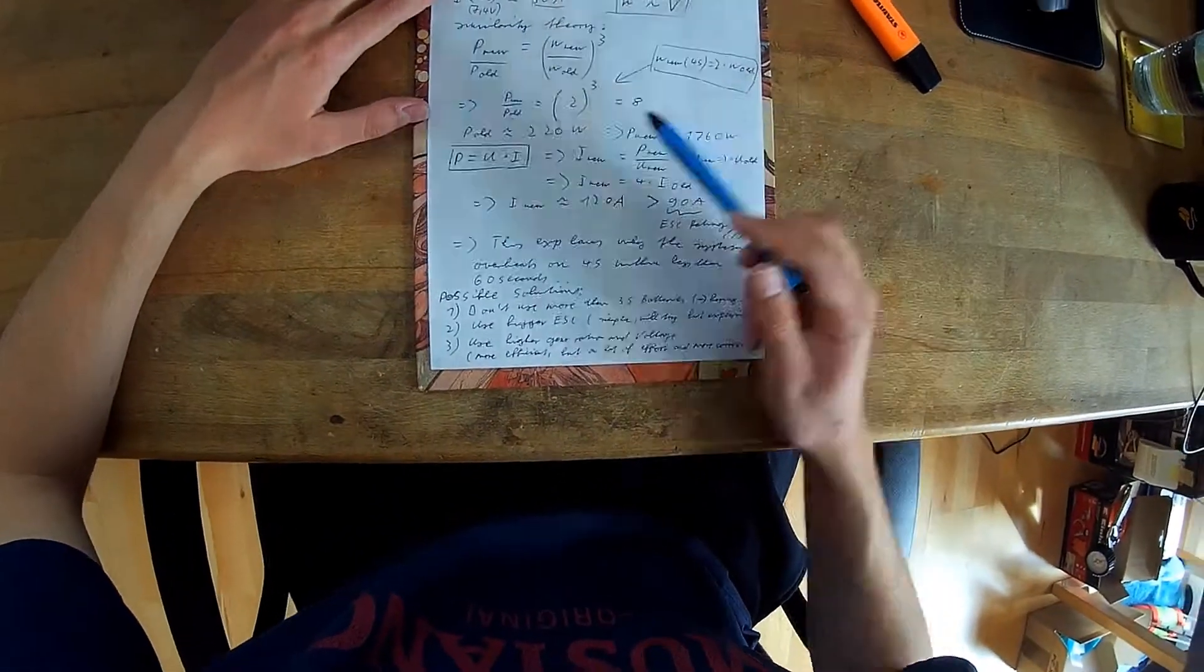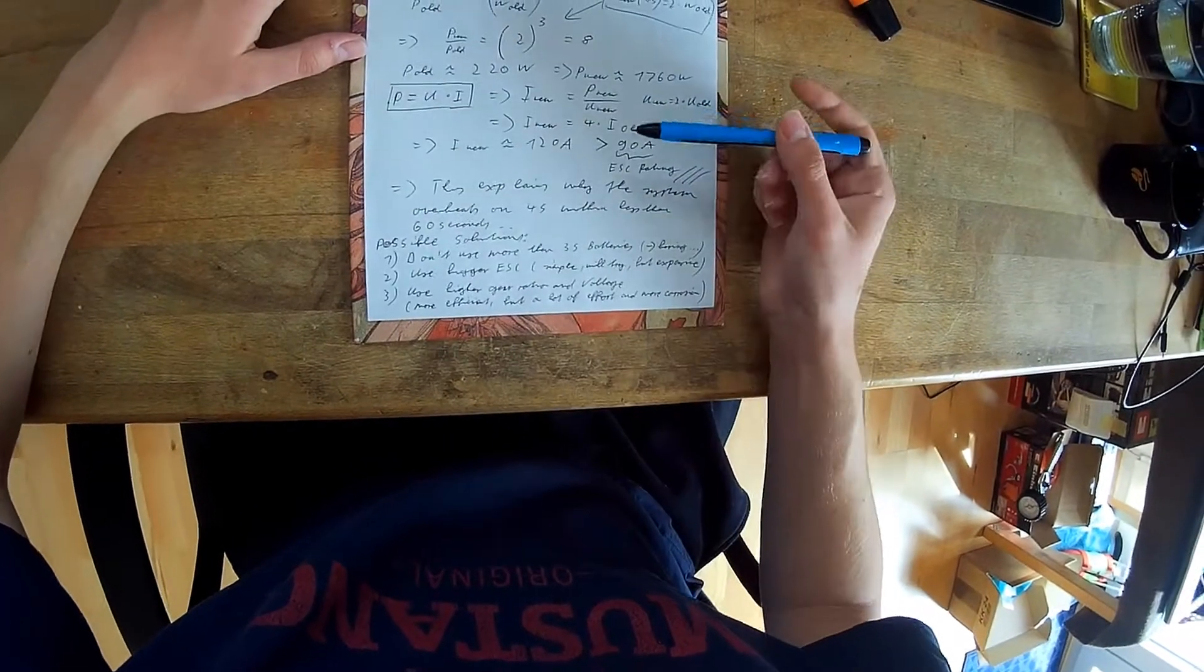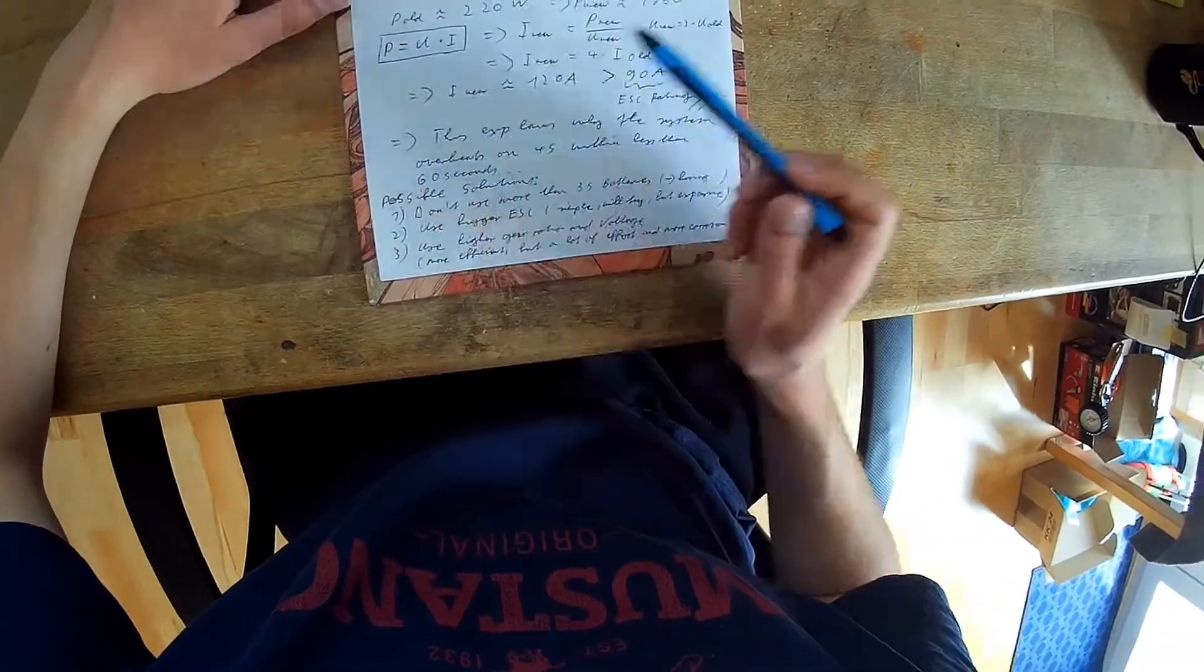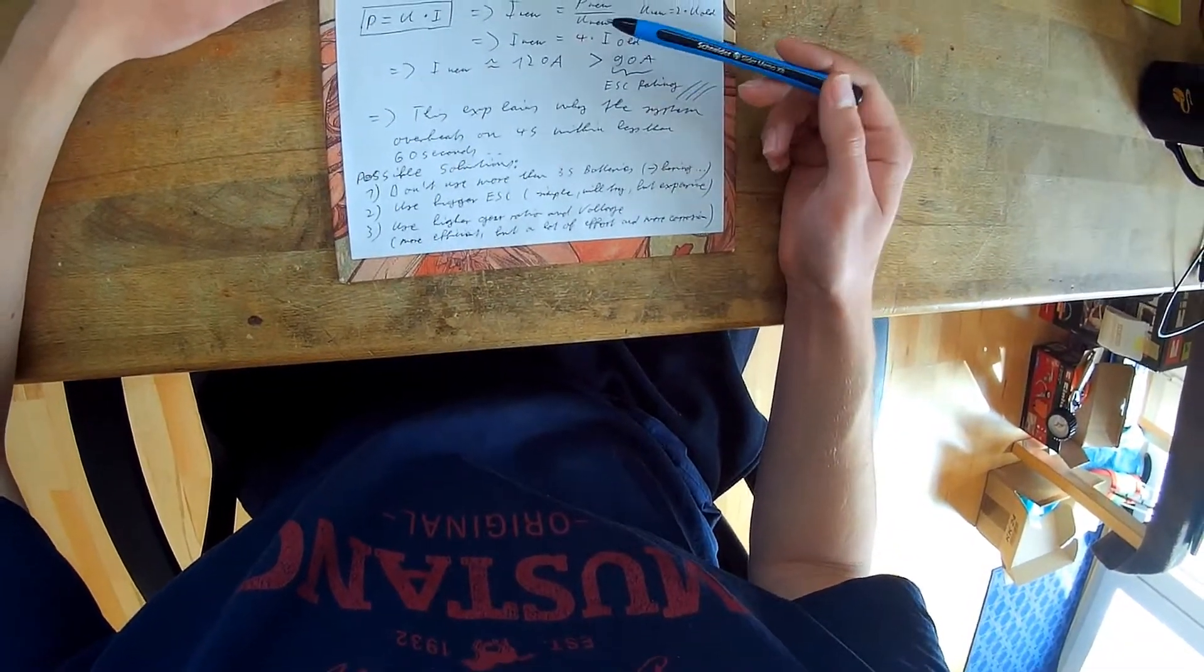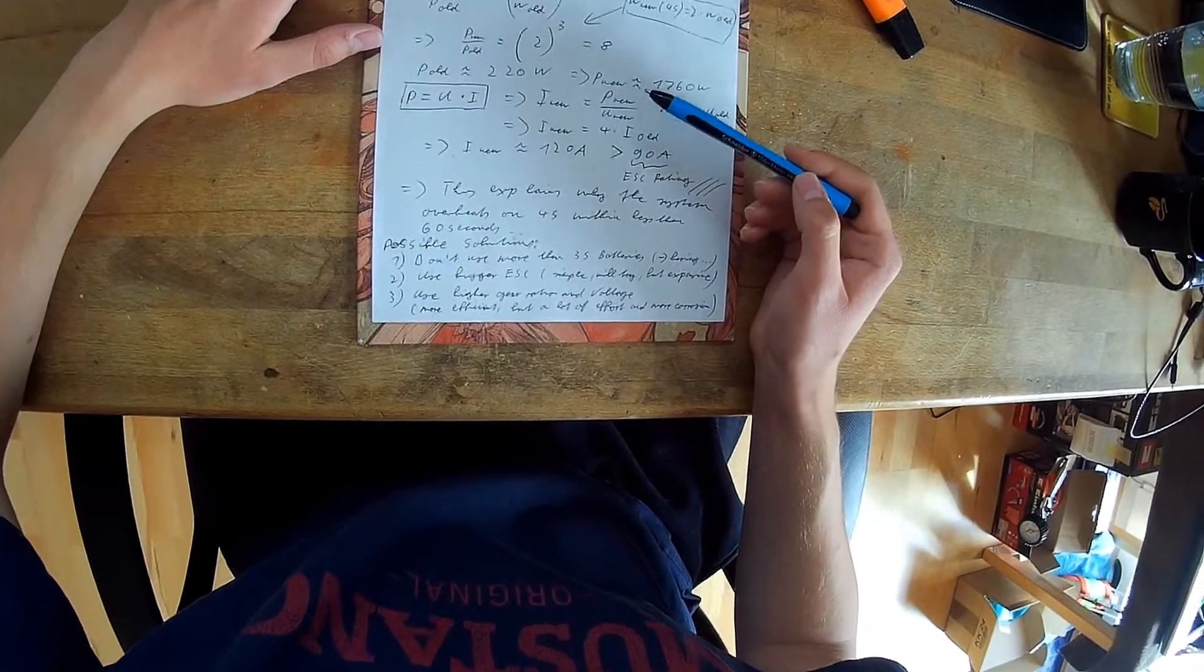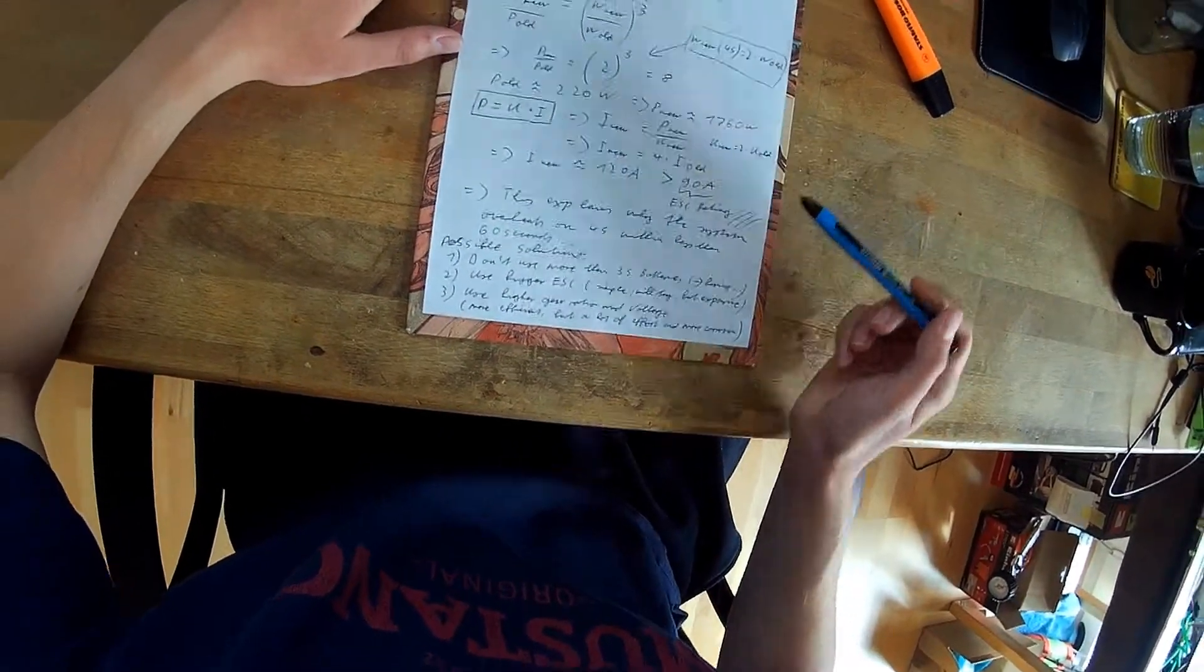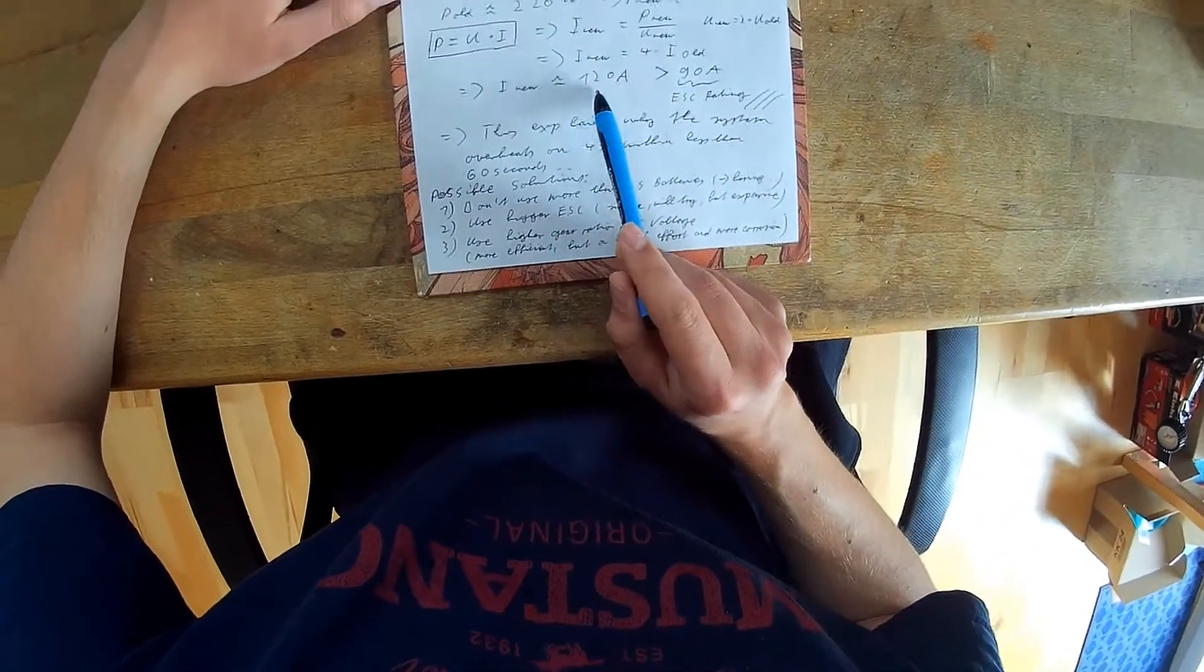And when we calculate the power, we can just multiply it by a factor of 8. So we got about 1800 watts. And then we can calculate the current, because we know that our new voltage is 2 times the old voltage and we know that the new power is 8 times the old power. So we know that the new current will be 4 times the old current. So that means that when the old current is 30 amps, the new current will be 120 amps.